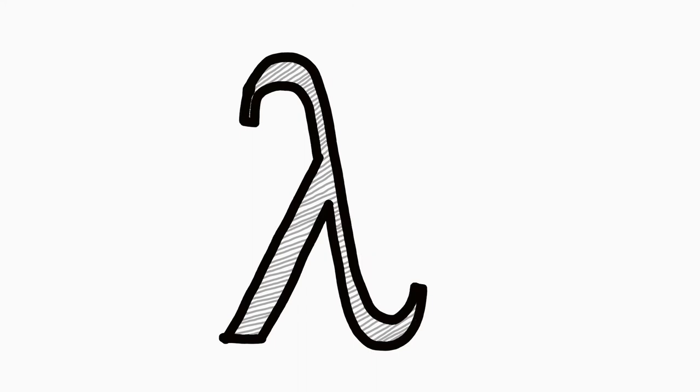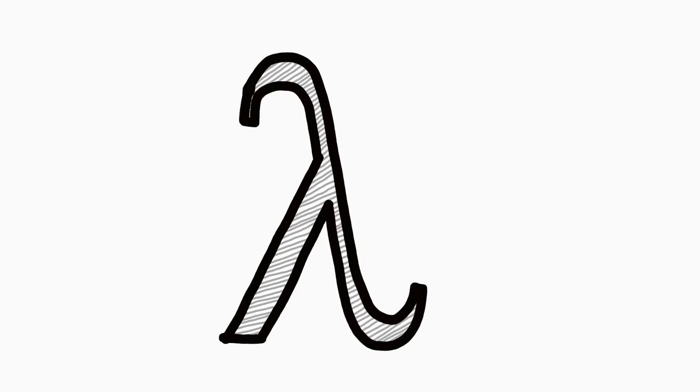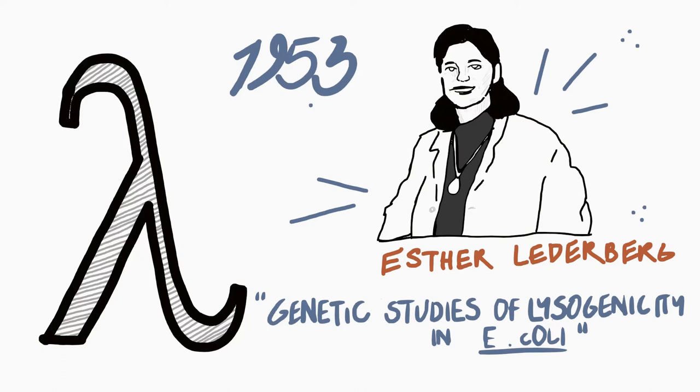a monumental development came in the form of temperate phage lambda. Upon its discovery by Esther Lederberg and her husband, reported in their 1953 paper Genetic Studies of Lysogenicity in E. coli, lambda rapidly became the experimental model organism to elucidate many of the most pressing questions in genetics.